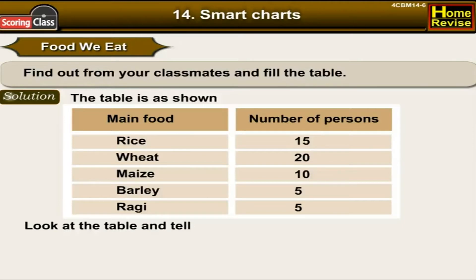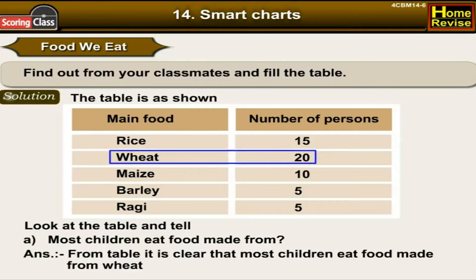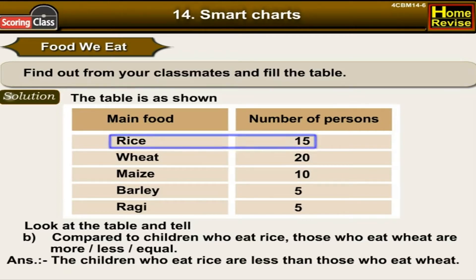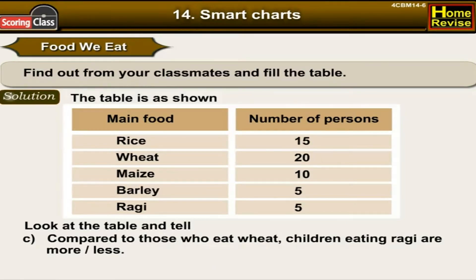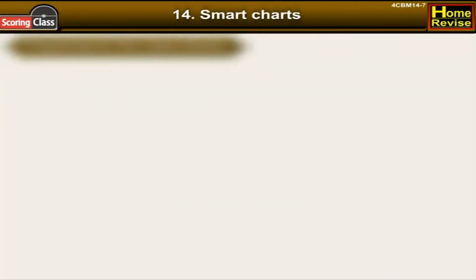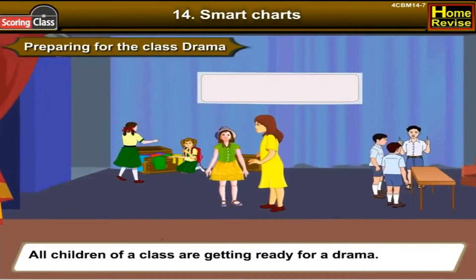Look at the table and answer: Most children eat food made from wheat. Compared to children who eat rice, those who eat wheat are more. Children who eat rice are less than those who eat wheat. Compared to those who eat wheat, children eating ragi are fewer.